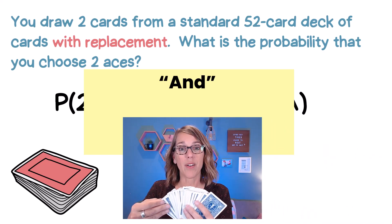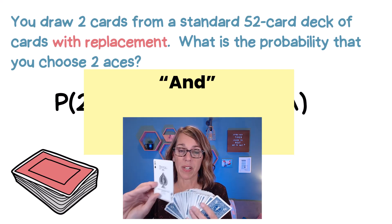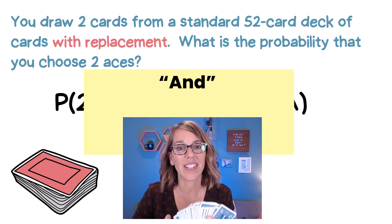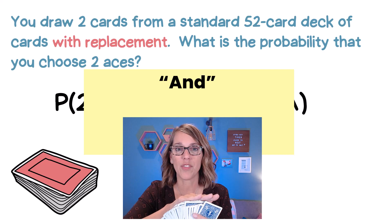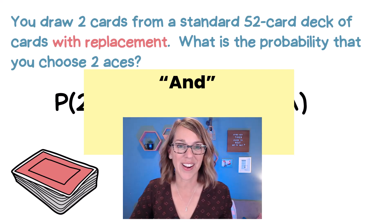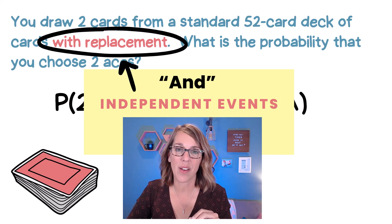With replacement means that when I go to draw the first card out of my 52 total, I'm going to draw it, but I'm going to put it back into my deck. So I start with my entire 52 cards for my second draw. Whatever I drew for the first card has no effect whatsoever on the second card. So these are independent events, all because of that with replacement.